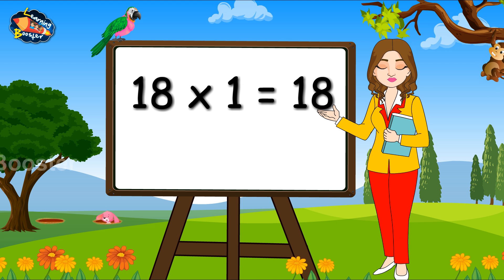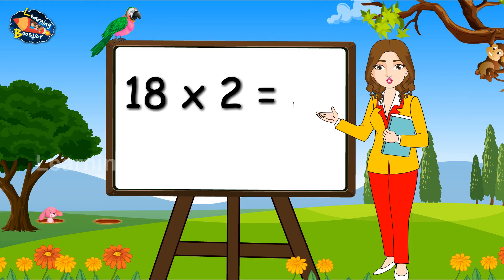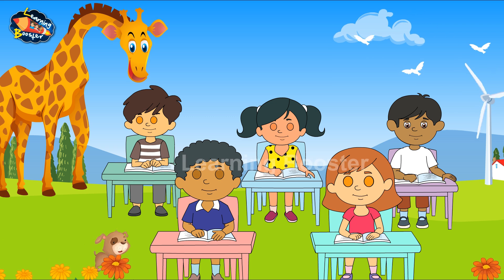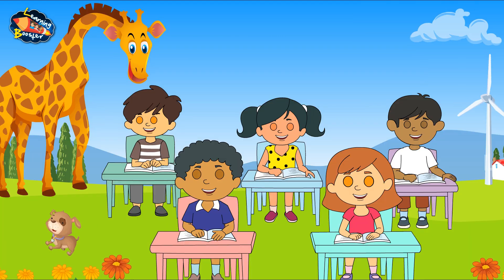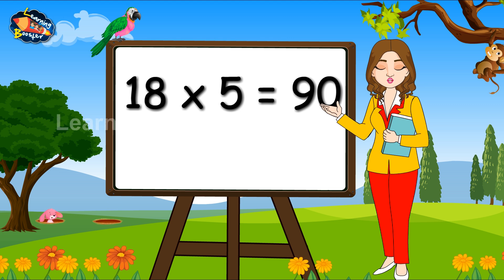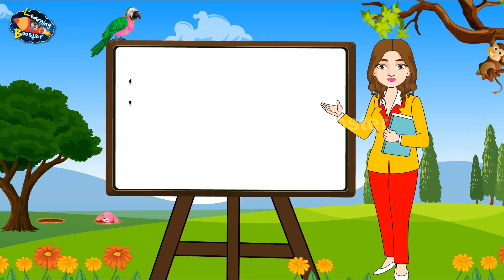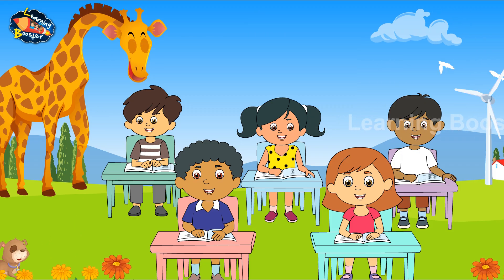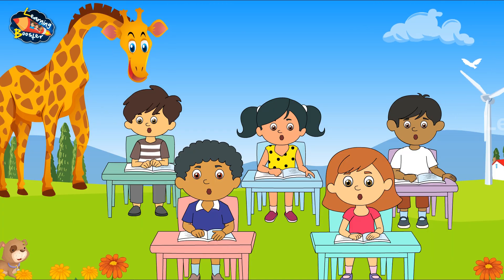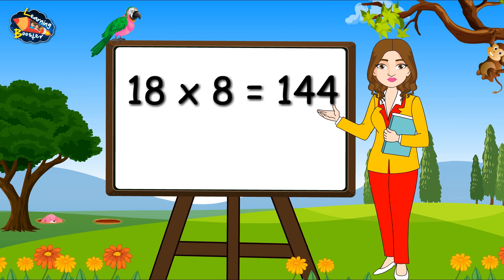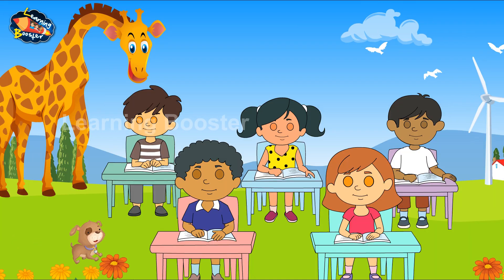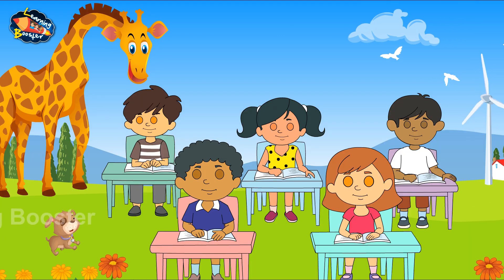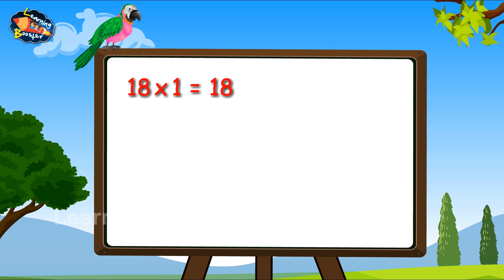Table of Eighteen. 18-1's are 18. 18-2's are 36. 18-3's are 54. 18-4's are 72. 18-5's are 90. 18-6s are 108. 18-7s are 126. 18-8s are 144. 18-9s are 162. 18-10s are 180.